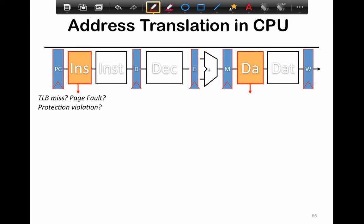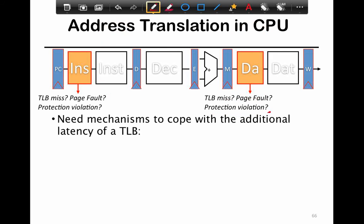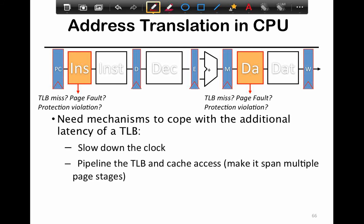Address translation in the TLB happens at the initial stages of the processor pipeline. This applies to instruction addresses loaded from memory in general, as well as data caches. All accesses to data go through the TLB. There are mechanisms to cope with the additional latency of the TLB, such as slowing down the clock or pipelining the TLB and cache access so that you can have multiple accesses outstanding at the same time.